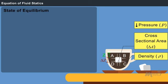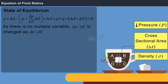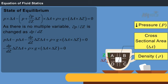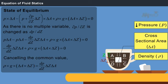Generally, any element in the fluid at rest is in the state of equilibrium. Thus, the total force acting on the section is equal to zero. Hence, P·delta A minus P·delta A minus ∂P/∂Z into delta Z into delta A plus rho into G into delta A into delta Z is equal to zero. On simplifying, minus ∂P/∂Z into delta Z into delta A plus rho into G into delta A into delta Z equals zero. Cancelling the common values, rho into G equals ∂P/∂Z.